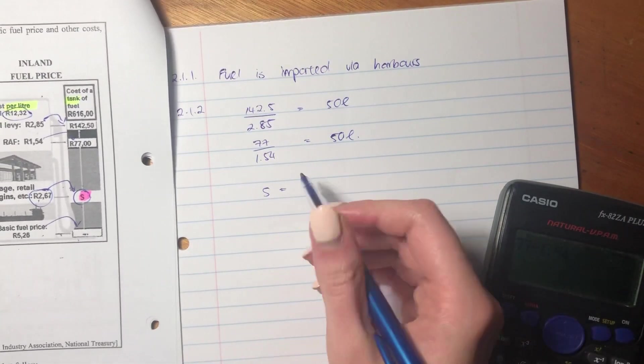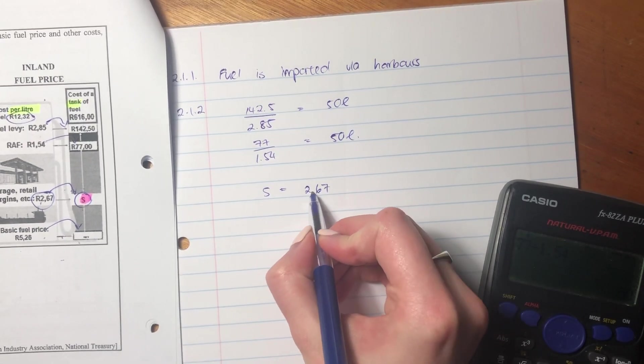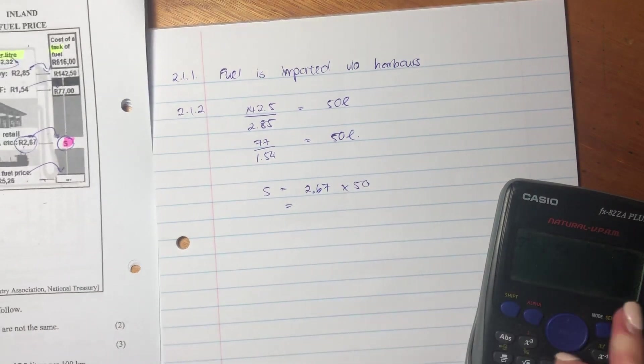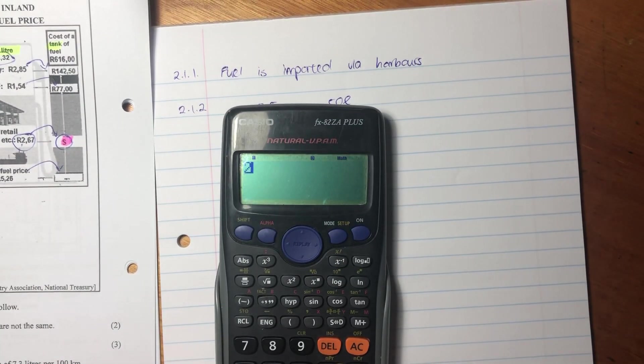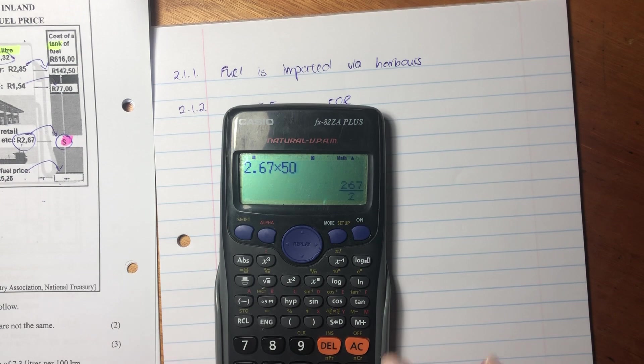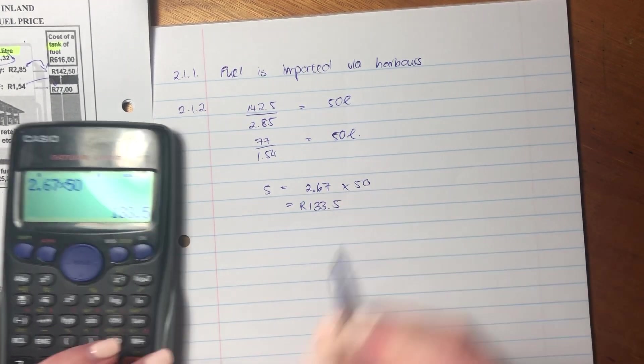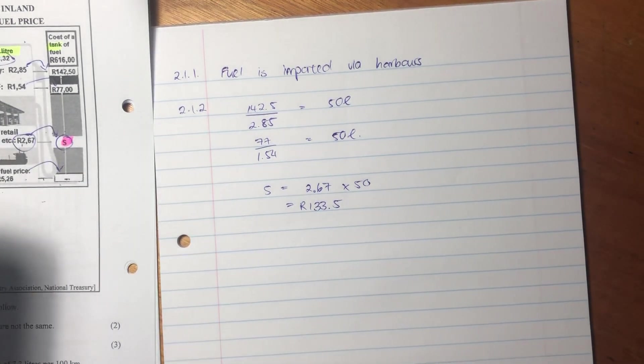So to get S, S would just equal 2.67, which is the cost in the liter, times by 50, and that would give you the cost in the tank. So that is an interesting one to think about, it's literally just a question about scaling.